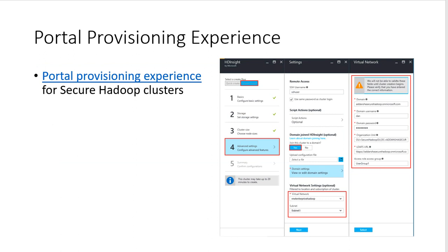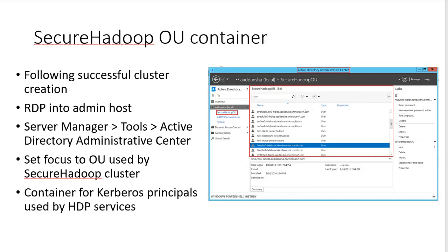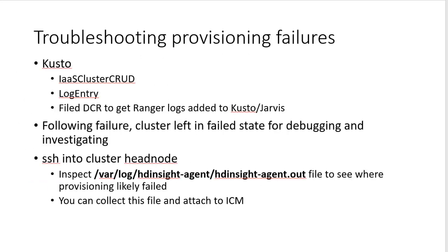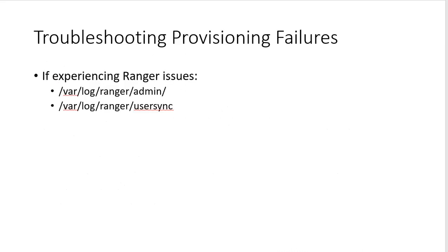The portal provisioning experience for secure Hadoop looks like this — HDInsight. After provisioning, you can see the container, RDP, admin tools, focus on the OU itself, and then the secure Hadoop cluster will show up. You can use Kerberos for authentication. If you have issues, these are basically the portal logs where you can see the issue logs. Or you can SSH the cluster — if you are a Linux engineer, you can inspect the var logs, HDInsight agent, and HDInsight out — like the STD out equivalent. You can collect those files and ship them for investigation if required. The last part: if you want to find the admin logs, you can see logs for Ranger admin or user sync.